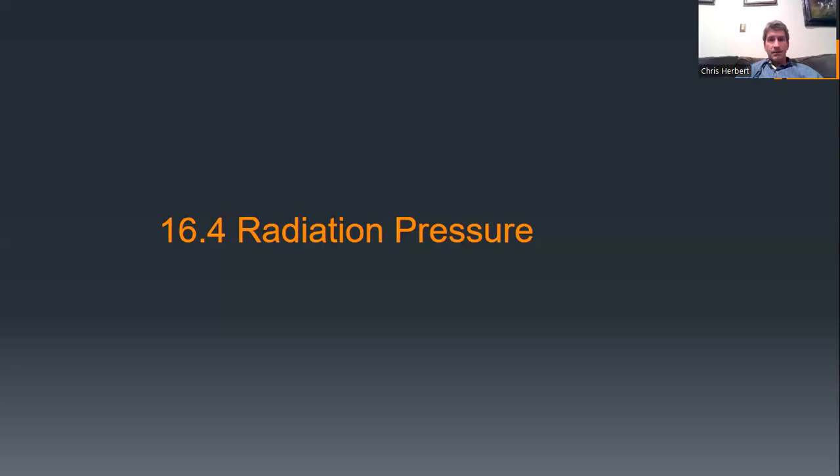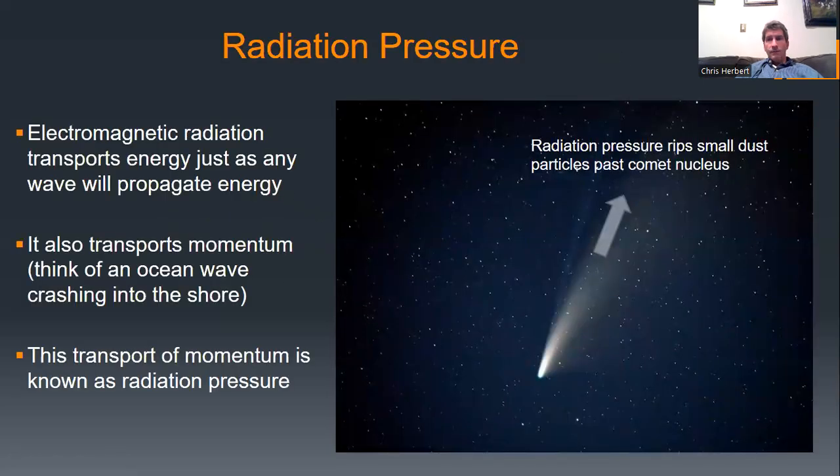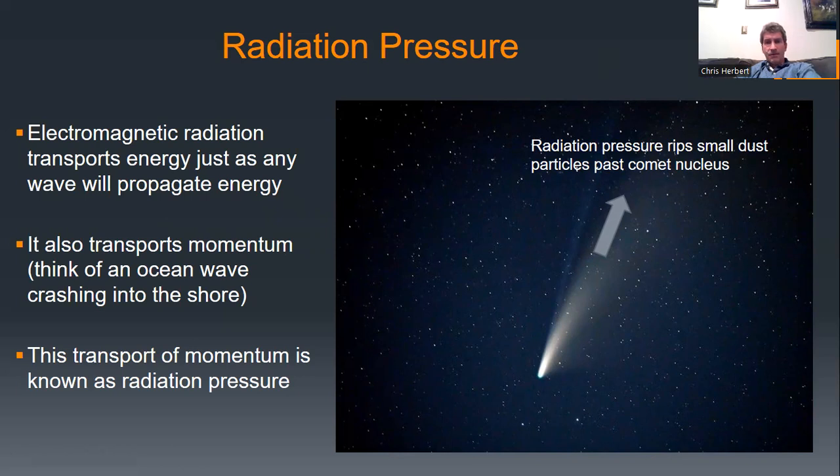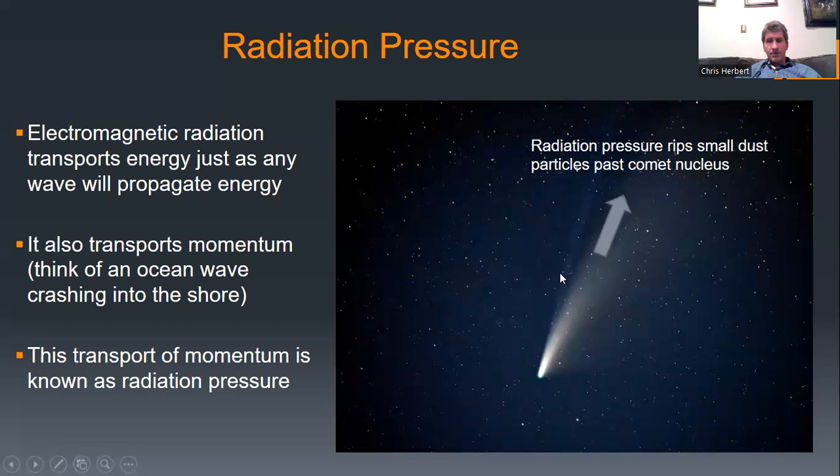Let's talk about radiation pressure. Radiation pressure was first observed in comets. Here we see a comet which has both a dust tail and a plasma tail. The plasma tail is that lighter tail to the left, sort of bluish. That represents plasma which is being essentially trapped by the magnetic field lines of the sun.